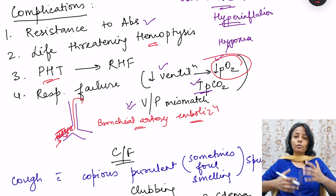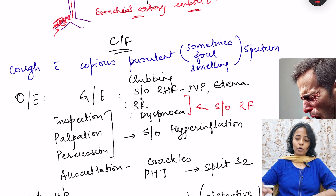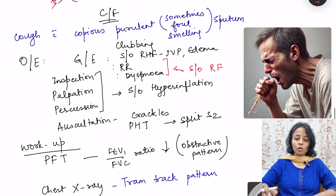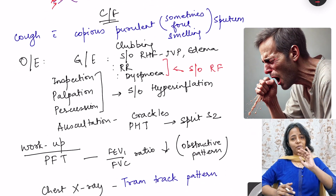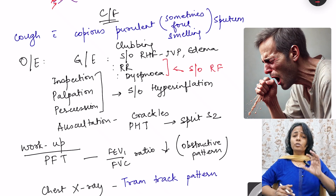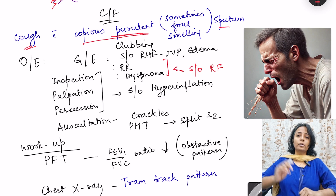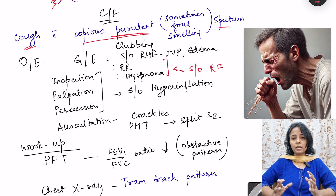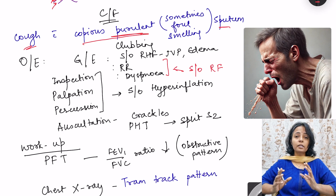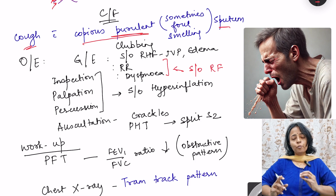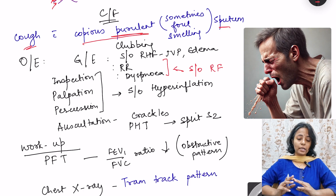Let us see the clinical features of bronchiectasis. Decreased bronchociliary clearance leads to persistent cough with copious purulent sputum, which is sometimes foul-smelling. Whenever there is a persistent cough with a large amount of foul-smelling sputum, we should suspect bronchiectasis.